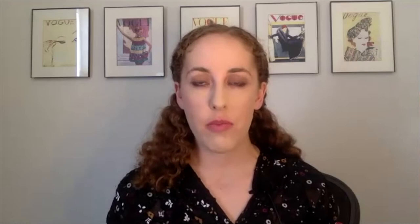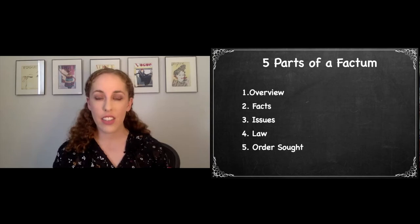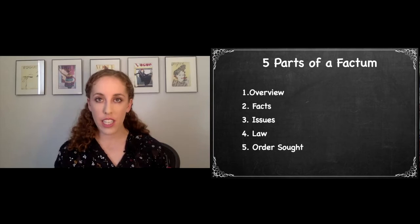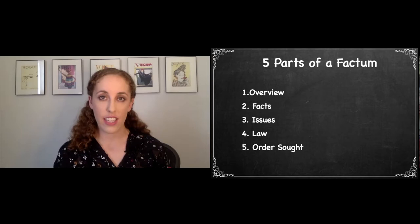There are usually about five parts to a factum. The first part is an overview, which puts into context what you're seeking and why — it's a short summary of your written argument. The second part is the facts. The third part is the issues that you are asking the court to decide. You might also see the law in that section or the law put into a separate section in part four. And lastly, part five is the order requested from the court.